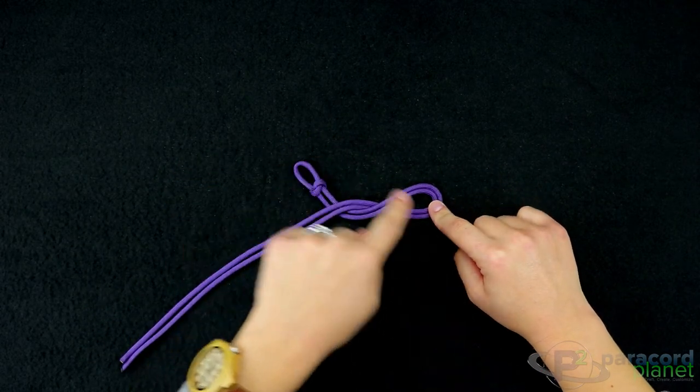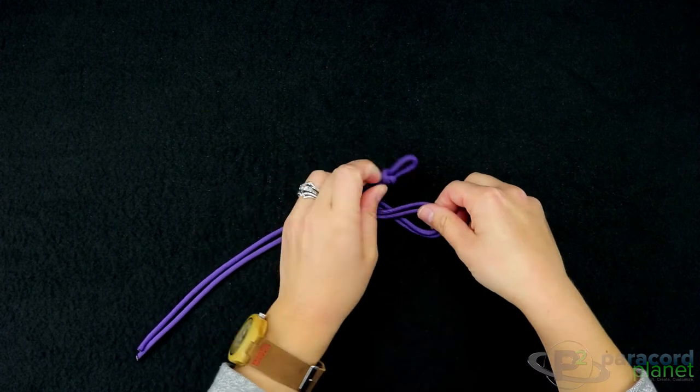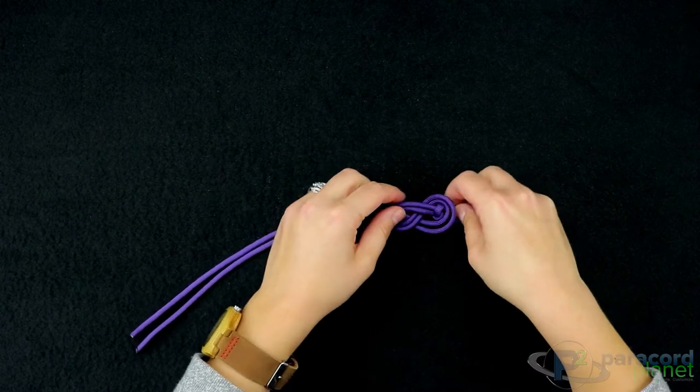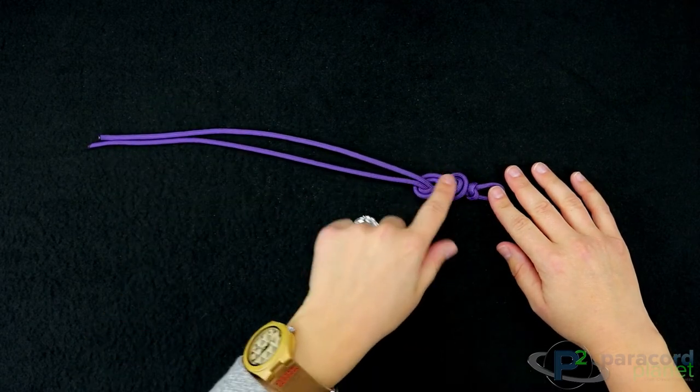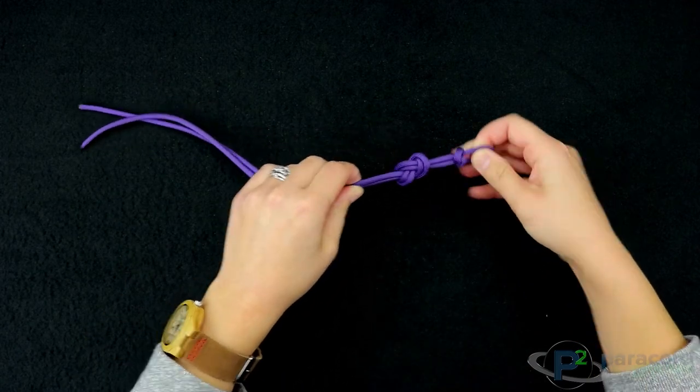Then you're going to take this part and go down through the loop there. So loosely that's what it should be, you can see the infinity knot there, and just gently pull it tight.